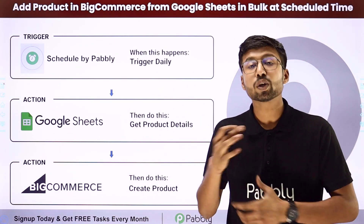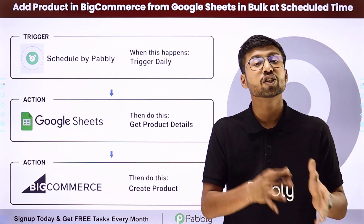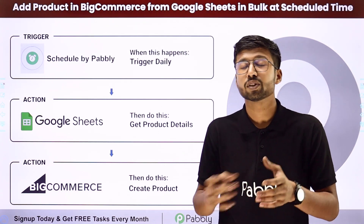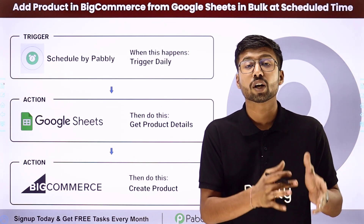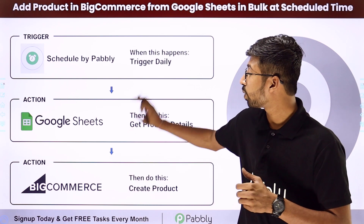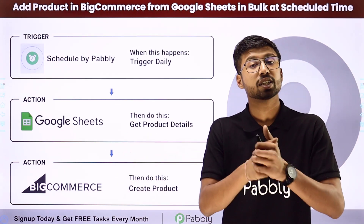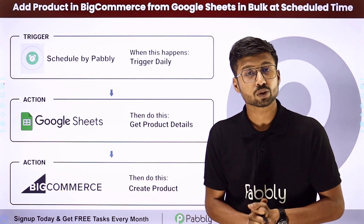You can actually automate this process. At a regular time interval, you can get the details of products which are ready for your e-commerce store from your Google Sheet and add those products into BigCommerce using this Pabbly Connect automation.